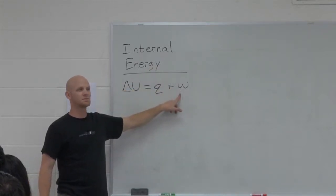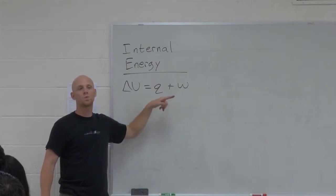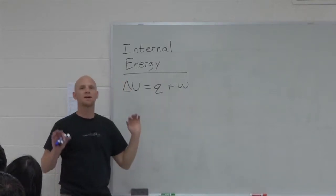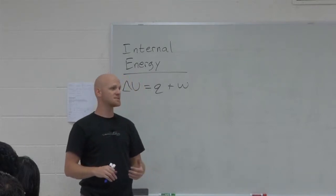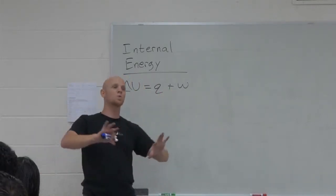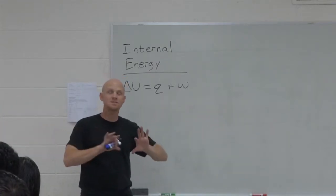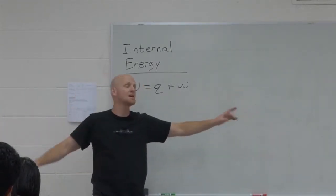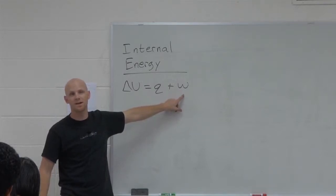What's w? Work. And again, work is also a mode of transfer. If the surroundings does work on the system, the system gains that energy, and w is positive. But if the system does the work on the surroundings, the system is giving that energy to the surroundings. And so the system would actually lose energy, and w would be negative.